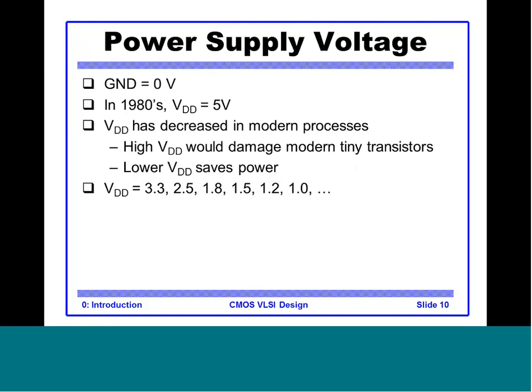VDD in the 1980s meant 5 volts, but as technology has shrunk, a higher VDD would damage tiny transistors. Along with decreasing technology, VDD has also decreased, resulting in lower power. Most technologies in production now use 1 volt, some even 0.9 or 0.8 volts. This is why battery-powered devices are prevalent — if VDD were still 5 volts, the battery would exhaust very quickly.